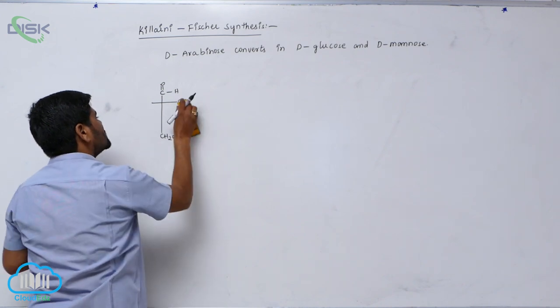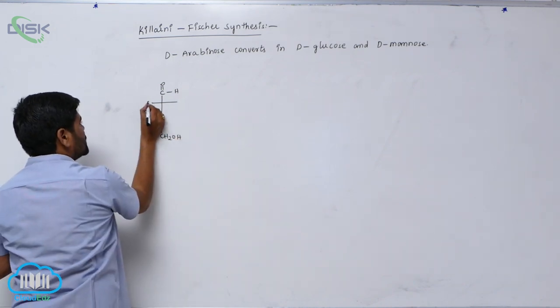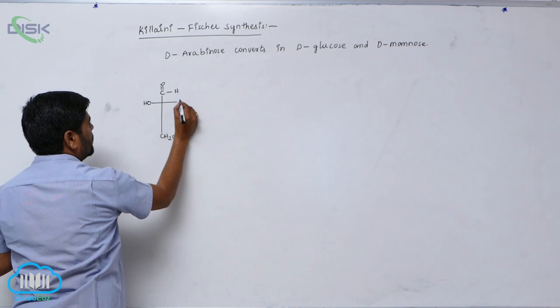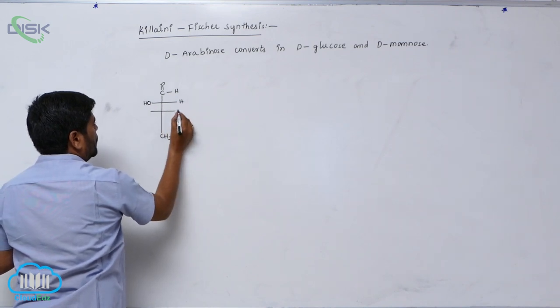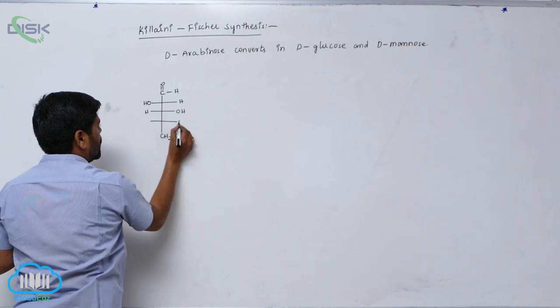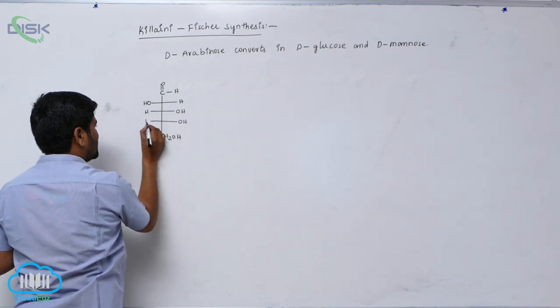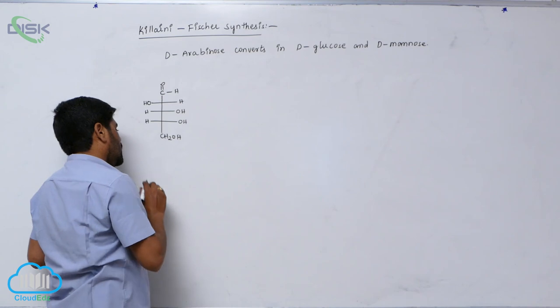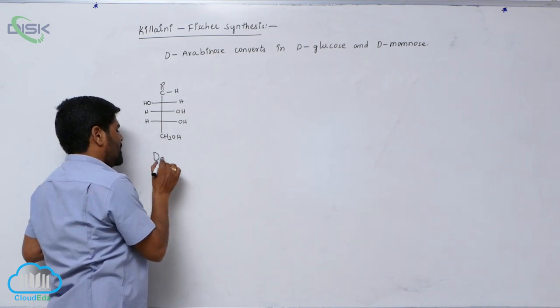CH2OH, second carbon OH is left here, third carbon OH is right, fourth carbon OH is also right. This is known as D-Arabinose.